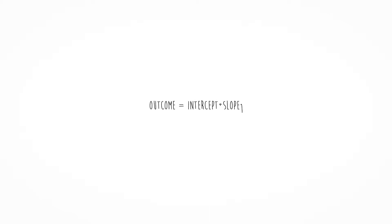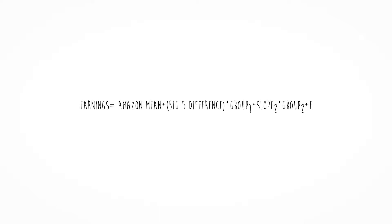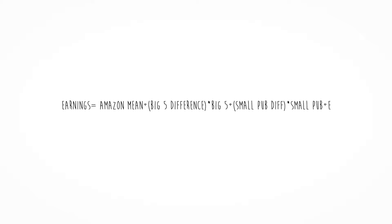Now the GLM looks like this: outcome equals intercept plus slope 1 times group 1 plus slope 2 times group 2 plus error. Or: author earnings equals the Amazon mean, plus the difference between Amazon and Big 5 times the Big 5 variable (1 or 0), plus the difference between Amazon and the small publishing company times the variable indicating whether they belong to the small publisher or not.